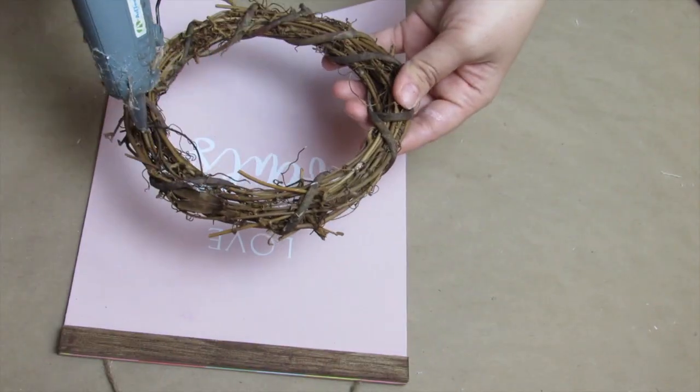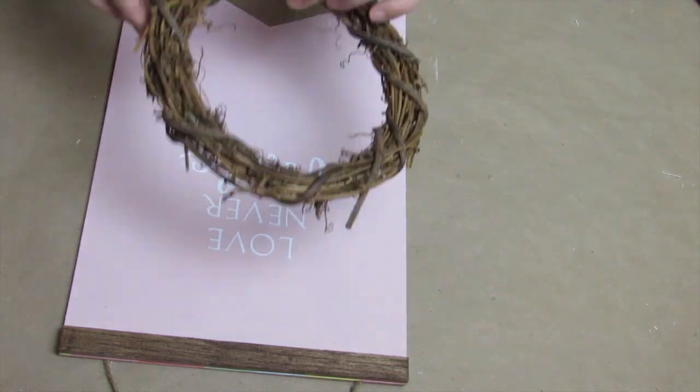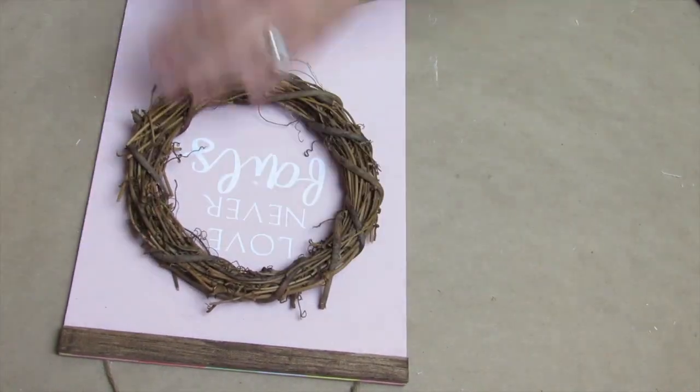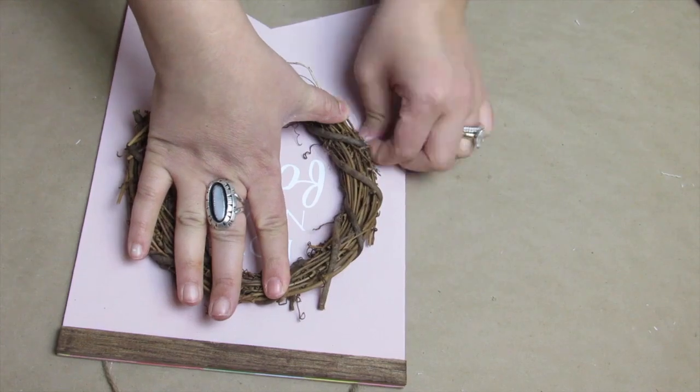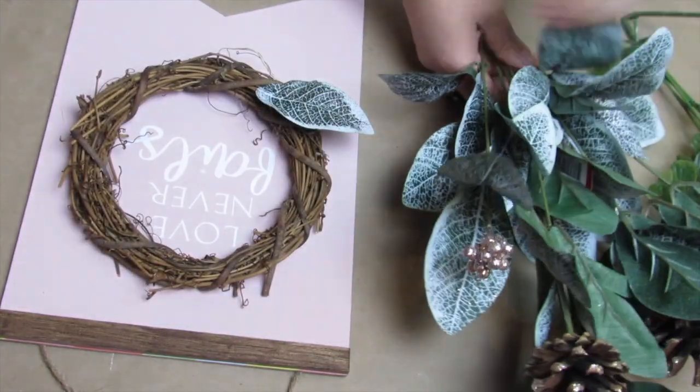Now I'm going to take this small grapevine wreath. This came in a four-pack from Hobby Lobby—you can get something similar at Dollar Tree. Just really any small wreath form is fine. Taking some hot glue, I apply it to the back and then press it down, making sure that my font is in the middle of the wreath.